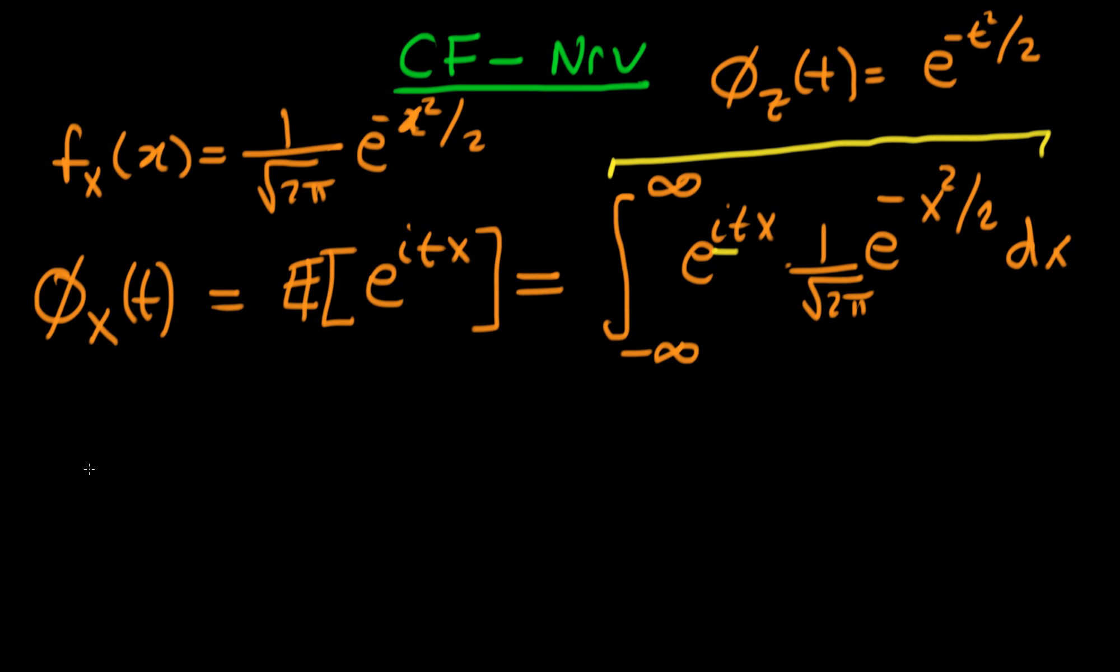To get this integral into a shape where we can do a complex contour integral, we need to get it into a particular form. I'm going to do a trick: pre-multiply this whole thing by e to the minus t squared over 2 divided by root 2 pi.